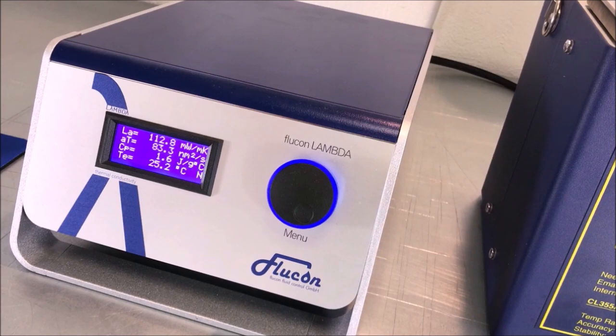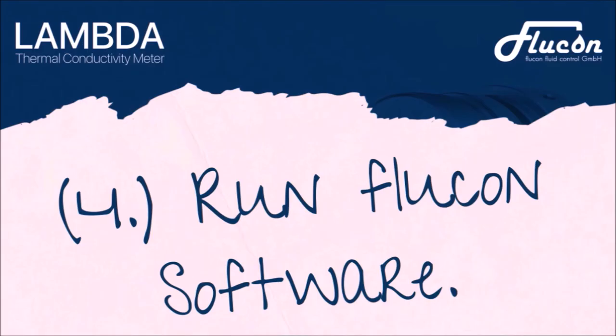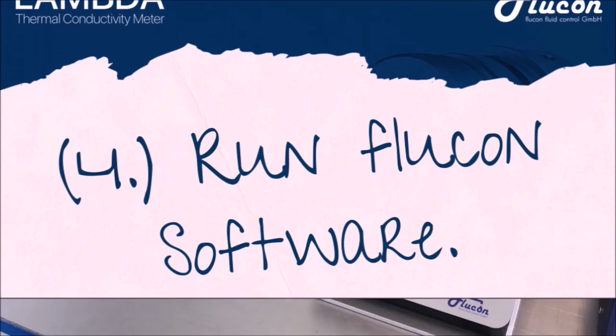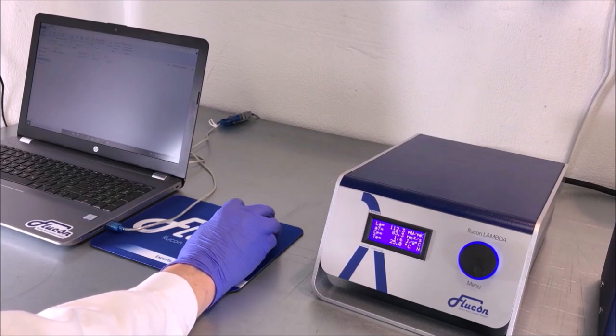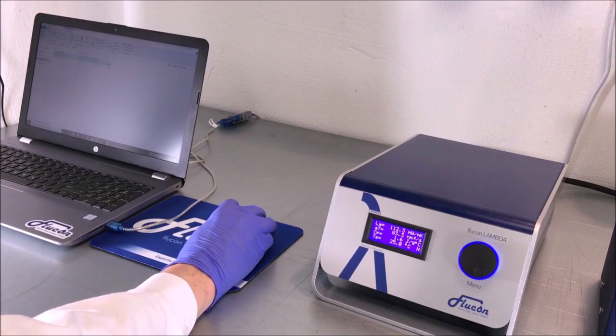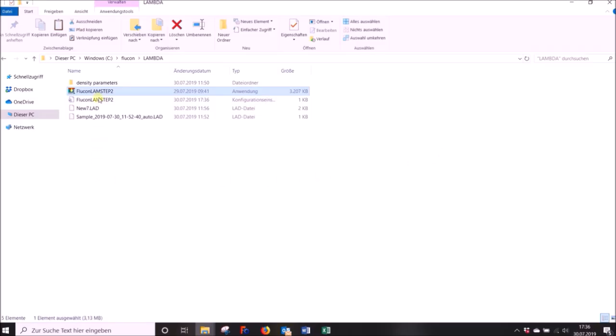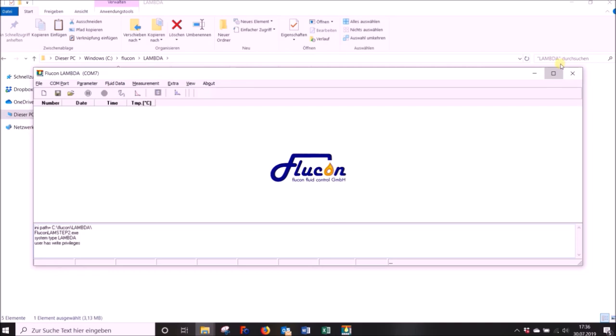You are now ready to use the Flucon software for automatic measurements and sample temperature control with the thermostat. Make sure that you copied your Lambda program to a directory with full administrative access. Click on the program icon to start the software.